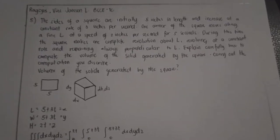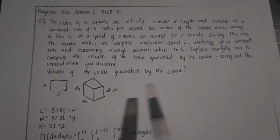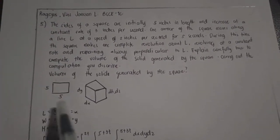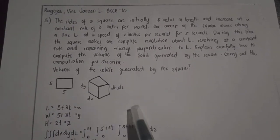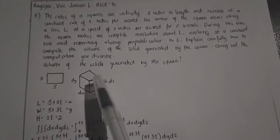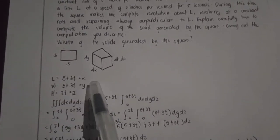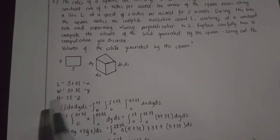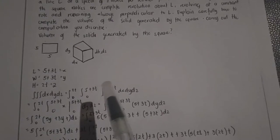First, we're going to draw the square. In its 2D perspective it would look like this, and in its 3D perspective it would look like this. The length is equal to 5 plus 3t, which equals x. The width is also 5 plus 3t, which equals y. The height is equal to 2t. Now we're going to solve this using the triple integral.